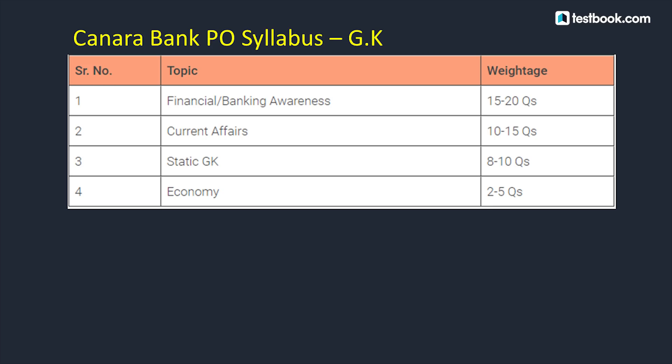For Static GK, expect 8-10 questions covering Indian states and their culture, country currencies, national parks, airports, stadiums, wildlife sanctuaries, cabinet reshuffling, places in news, regulatory bodies, headquarters and organizations, and UNESCO World Heritage Sites. From Indian Economy, expect 2-5 questions on Financial Organizations, Budget, Economic Survey, GDP, and GST.